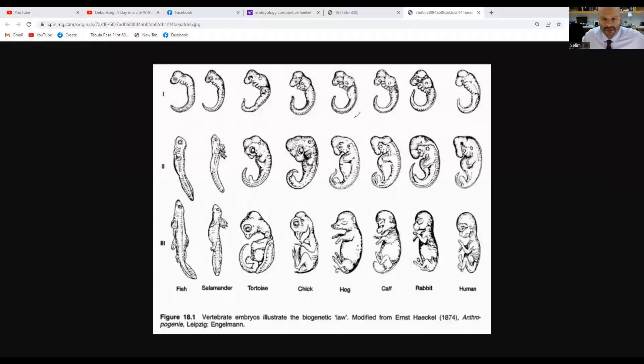Hi class, I wanted to talk about the concept of comparative embryology and why this is an important piece of the puzzle to understanding evolution and common ancestry. What we have here is an image drawn by a biologist in 1874.